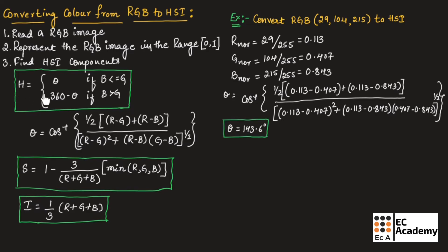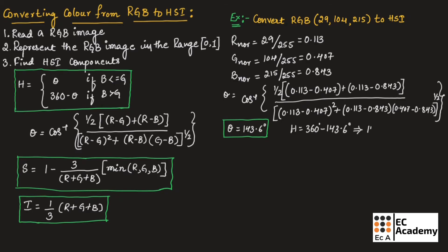Now we need to find the value of H. Since the value of blue (0.843) is greater than the value of green (0.407), we use the formula H equals 360 degrees minus theta. So H equals 360 degrees minus 143.6 degrees, which gives H equal to 216.4 degrees.